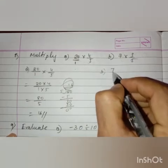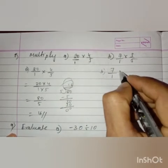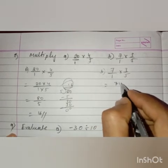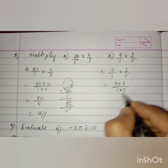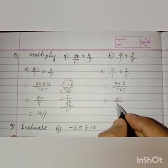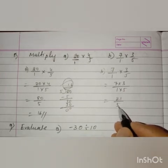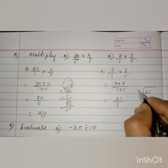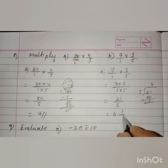Next, question number 8b: 7 into 3 by 5. We do not have a denominator, so let us put 1. Multiply numerators and denominators: 7 into 3 by 1 into 5 equals 21 by 5. Since 21 is not divisible by 5, we convert to a mixed fraction. The answer is 4 and 1 by 5.